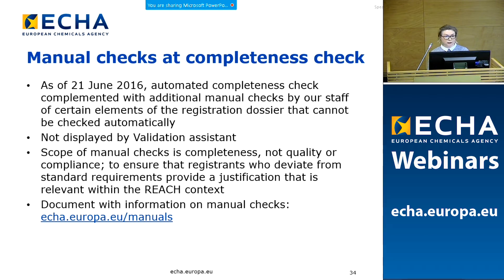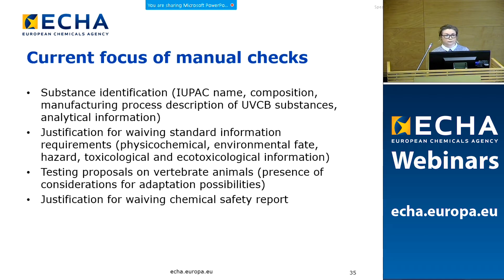ECHA has published a detailed document about the manual checks on the ECHA website, updated regularly to ensure the most recent information is available. The current focus covers four topics: firstly, substance identification, which includes IUPAC name, composition, manufacturing process description of UVC-B substances, and analytical information. Secondly, the justification for waiving standard information requirements for physicochemical, environmental, fate, and hazard information. Thirdly, new testing proposals on vertebrate animals, where we check that considerations for adaptation possibilities have been provided. And finally, the justifications for waiving chemical safety reports.